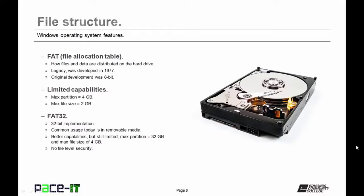FAT32 came along as a vast improvement — a 32-bit implementation. Its common usage today is in removable media like USB flash drives and camera memory cards. It had much better capabilities, but is still limited: max partition is 32 gigabytes, max file size is 4 gigabytes, and it offers no file-level security.